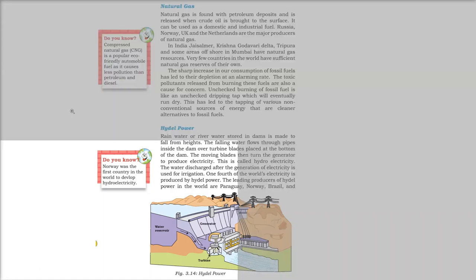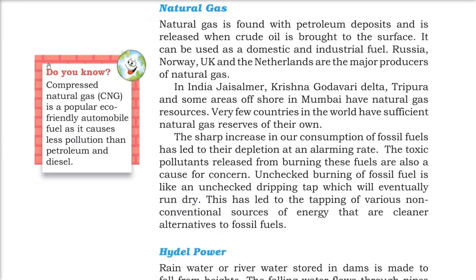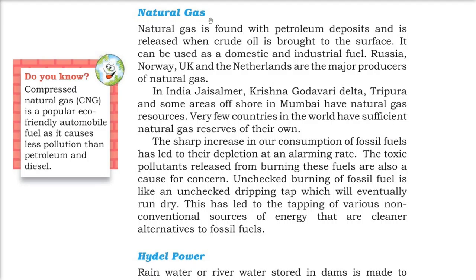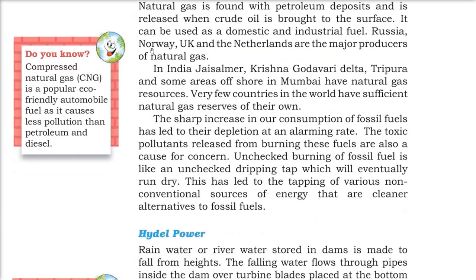Coming to natural gas — first, CNG, or compressed natural gas, is a popular eco-friendly automobile fuel that causes less pollution than petroleum and diesel. Natural gas is found with petroleum deposits and is released when crude oil is brought to the surface. It can be used as domestic and industrial fuel. Major producers are Russia, Norway, UK, and Netherlands. In India, natural gas resources are found in Jaisalmer, Krishna Godavari Delta, Tripura, and offshore Mumbai.